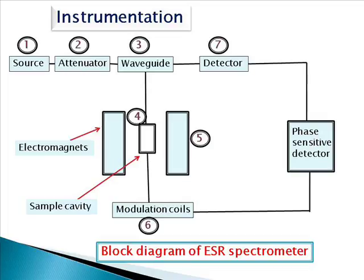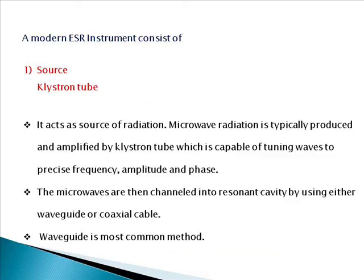The first component of a modern ESR instrument is the source, which is a klystron tube that acts as a source of radiation. Microwave radiation is typically produced and amplified by the klystron tube, which is capable of tuning waves to a precise frequency, amplitude, and phase. The microwaves are then channeled into the resonance cavity using either a waveguide or coaxial cable — the waveguide being the most common method.